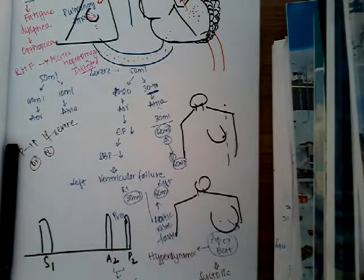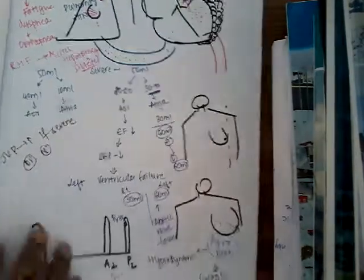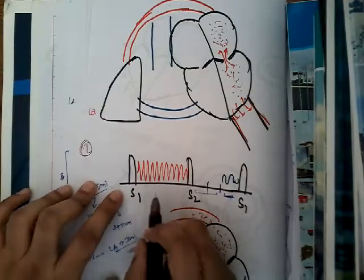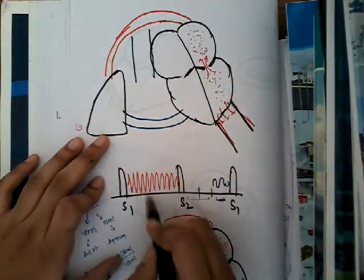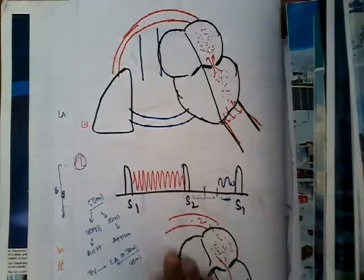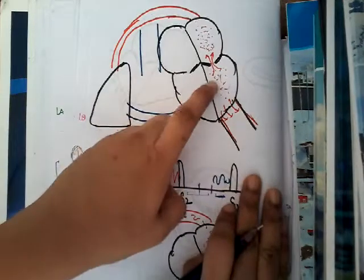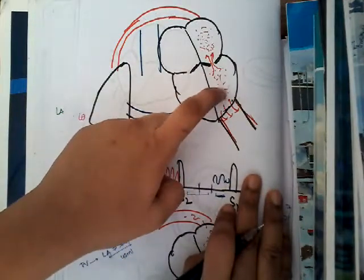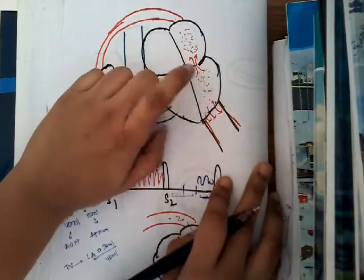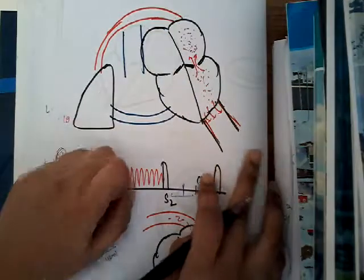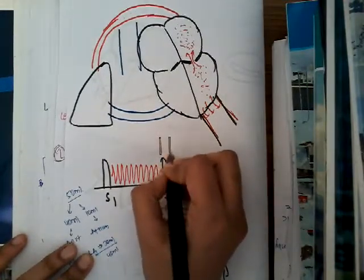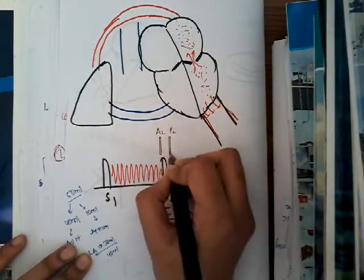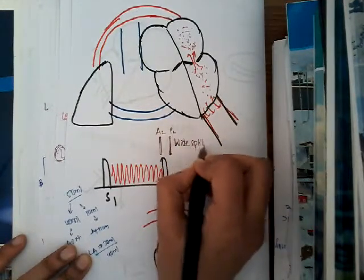On auscultation, first there will be a holosystolic murmur. This is because during systole, blood regurgitates from the ventricle to the atrium. Additionally, because the left ventricle has a large amount of blood and contracts with higher pressure, it contracts faster than the right ventricle. As a result, S2 may split into A2 and P2 — a wide split S2 may be seen.